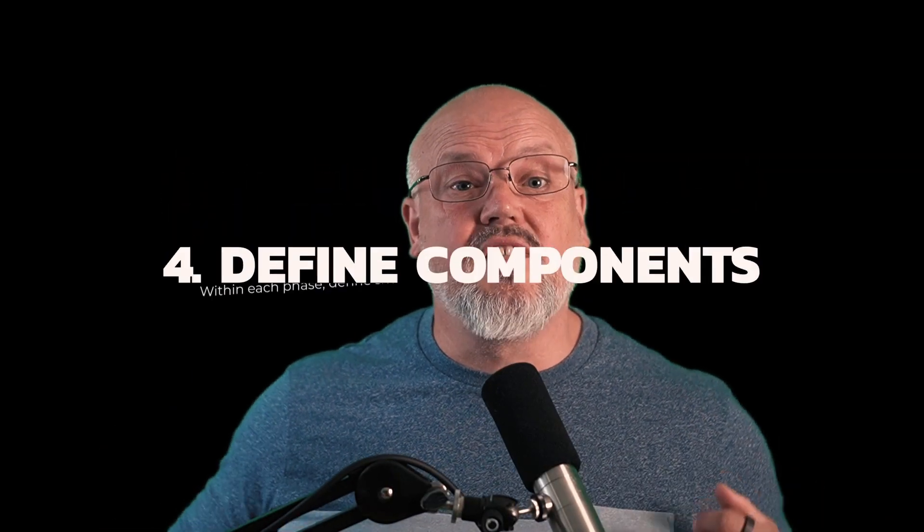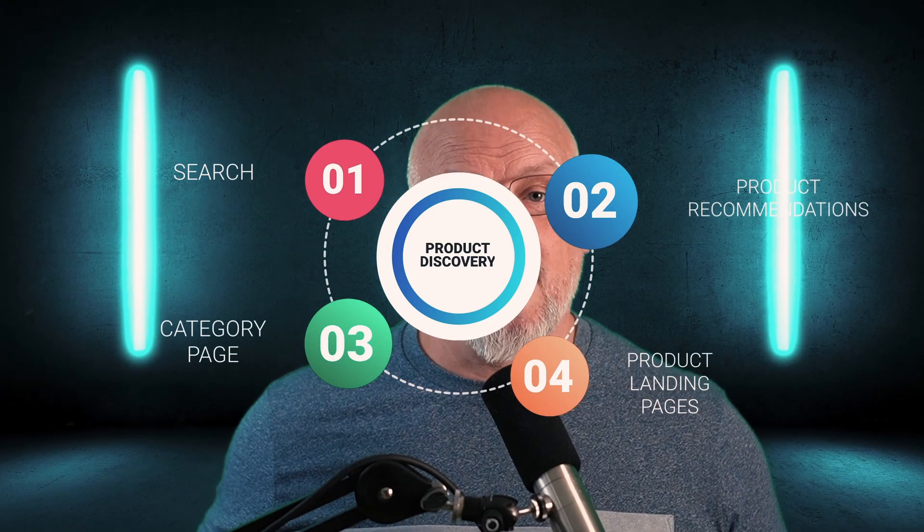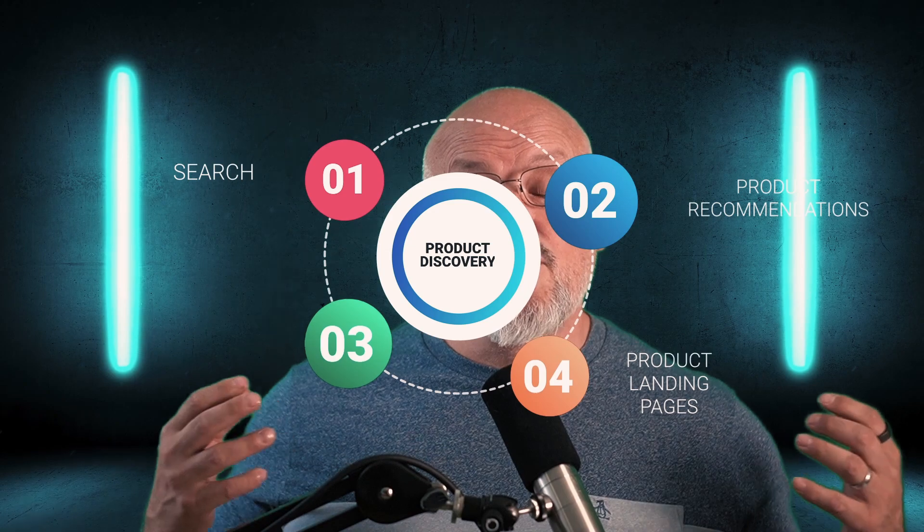Number four: start defining your components. Within each phase, define the smaller components or tasks that must be addressed. These components may represent specific functionality or pages within those phases. For instance, within a product discovery phase, you may have components like search and product recommendations, or pages like product landing pages and search pages.